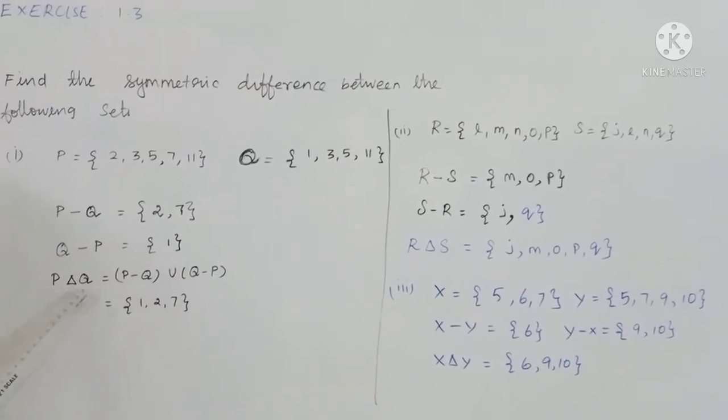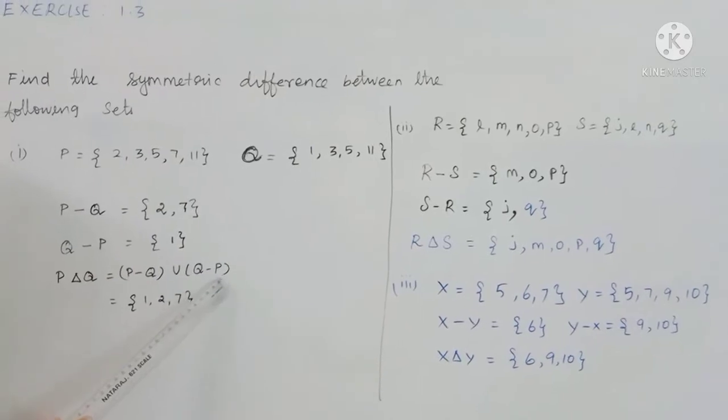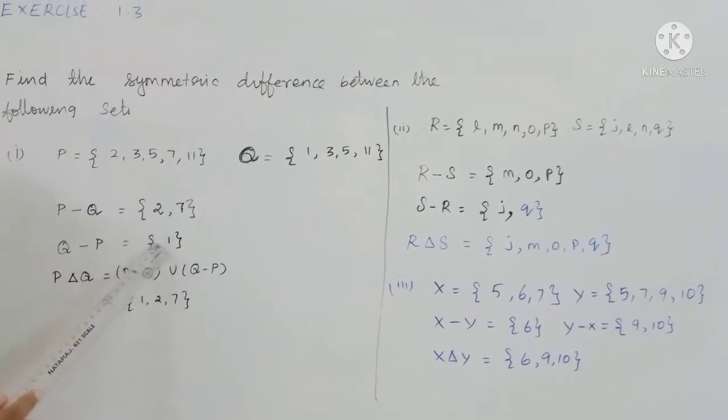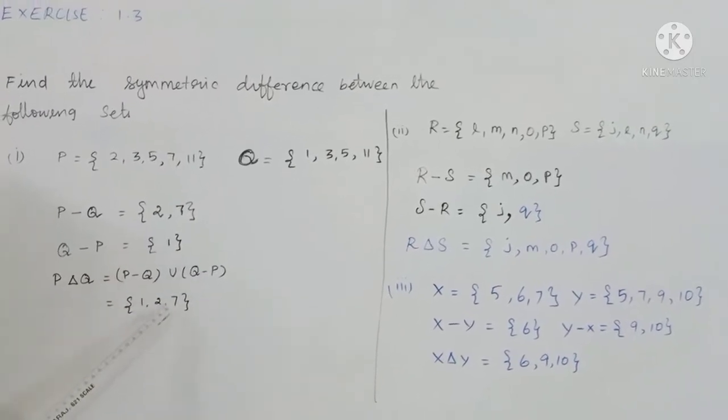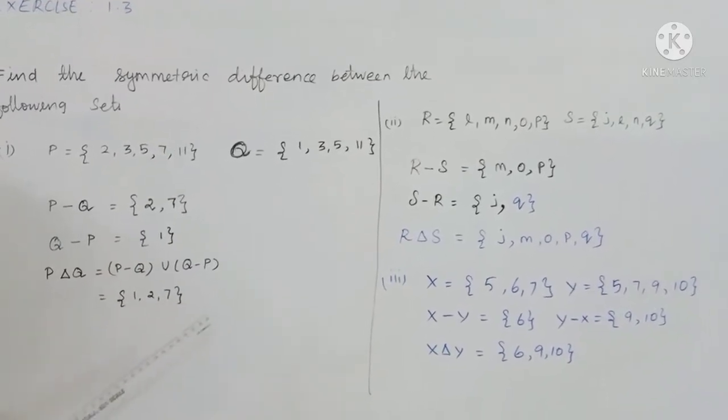P symmetric difference Q equals P minus Q union Q minus P. The result is {1, 2, 7}. This is the book back answer.